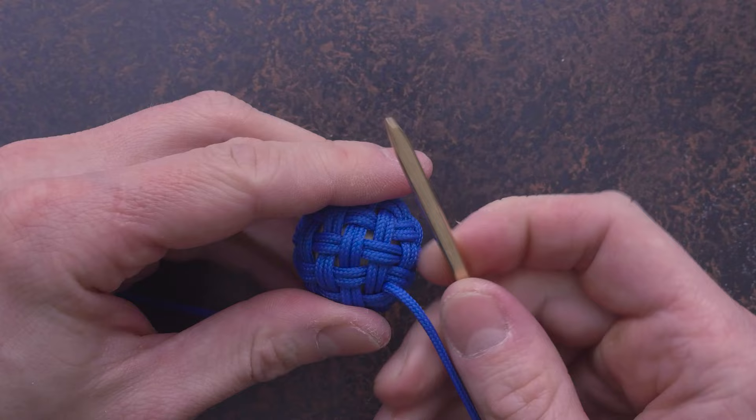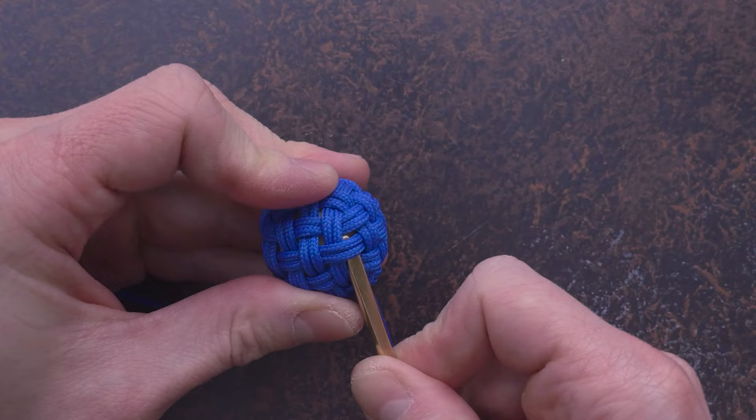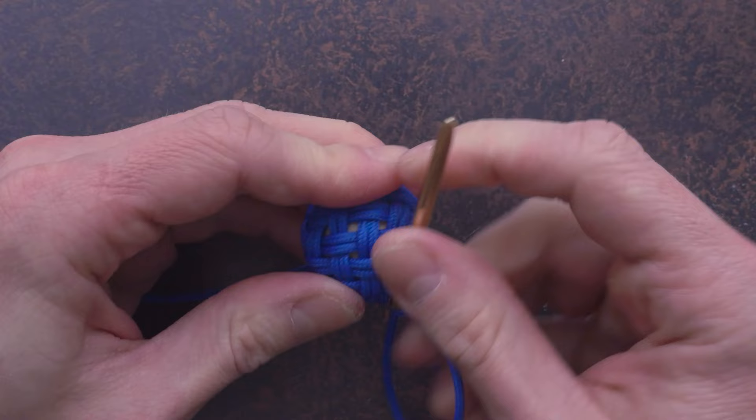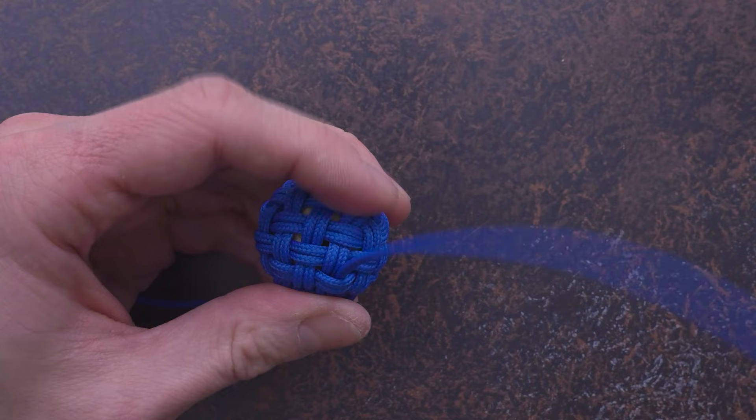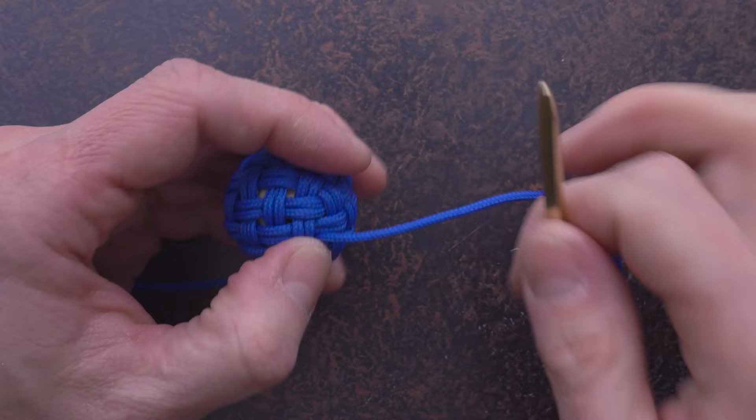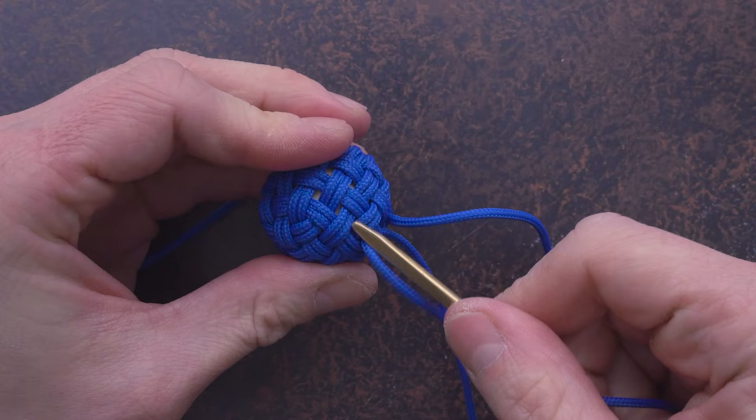After tightening up our knot onto the core, not too tightly, we continue by adding another pass to our knot. This pass is going to close up any gaps, plus tighten up our knot a bit further.